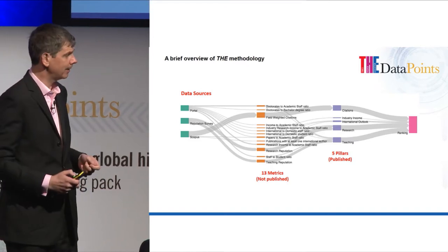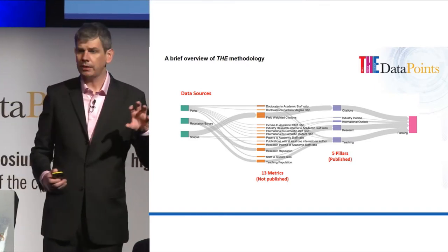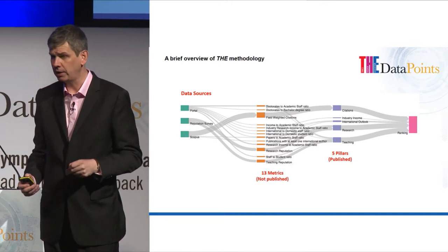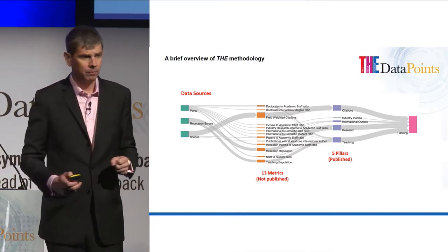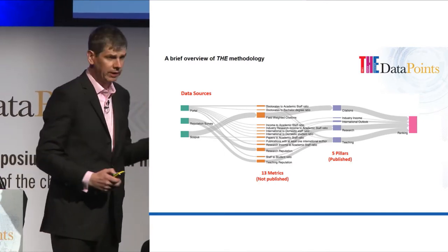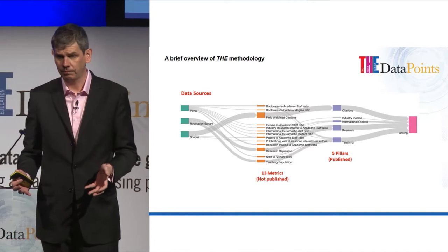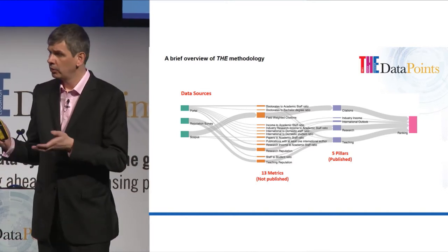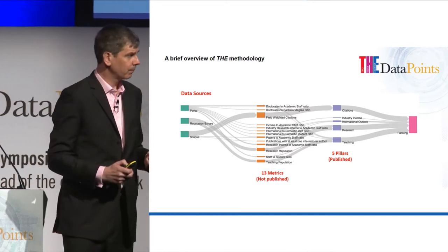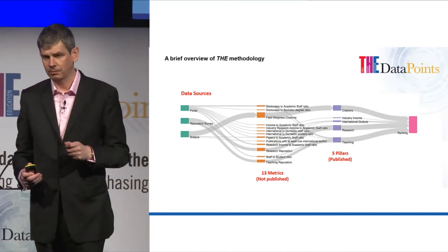I will talk more about that later. Our third set of data is the bibliometric data, which we take from our friends at Elsevier from their Scopus data set. So from those three data sets, we create 13 different measures.